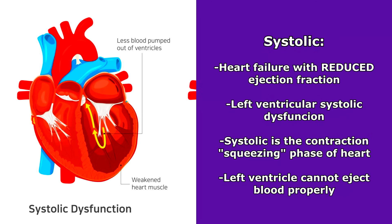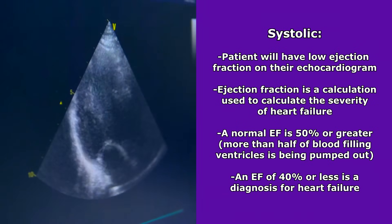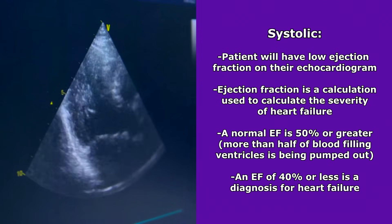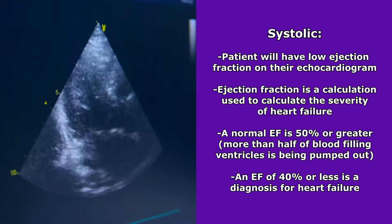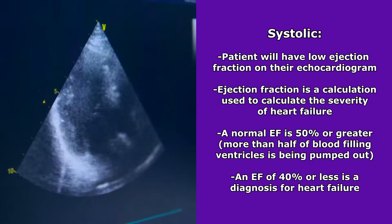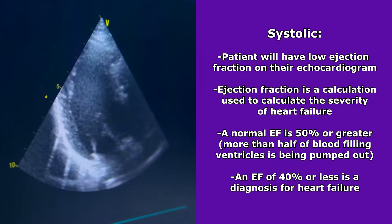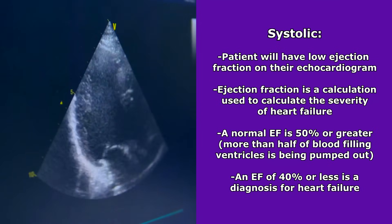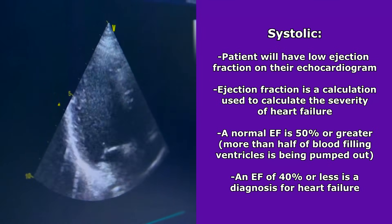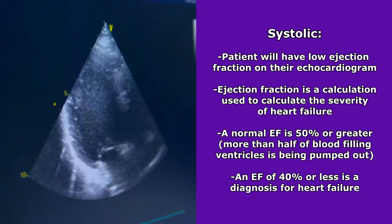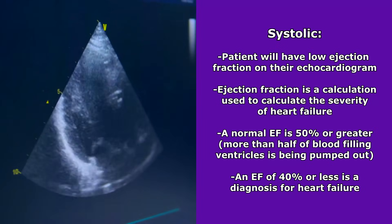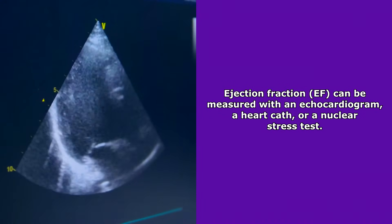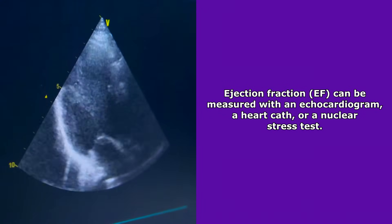So the organs can't get all this rich oxygenated blood that it needs. And you're going to see that the patient will have a low ejection fraction on their echocardiogram. Now what is ejection fraction? Well, ejection fraction is a calculation used to determine the severity of heart failure. A normal EF is 50% or greater, meaning more than half of the blood that fills the inside of ventricles is being pumped out. And an EF of 40 or less is a diagnosis for heart failure. And again, the EF can be measured with an echocardiogram, a heart cath or a nuclear stress test.